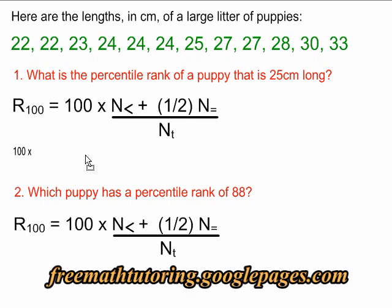When we fill in the formula, we have N less than of 6, because these six puppies are less than 25. And our N equals is replaced with a 1. Our N total is replaced with a 12.